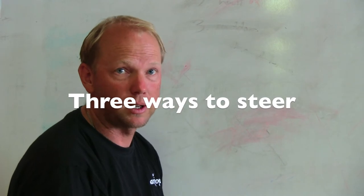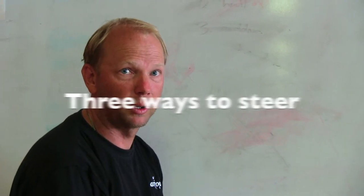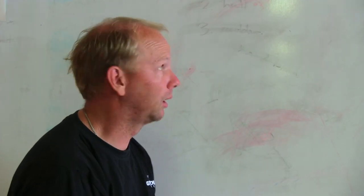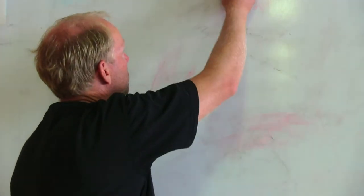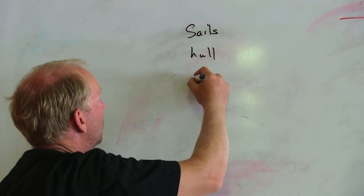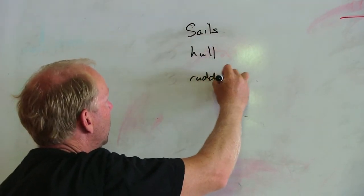I alluded to steering in the last section on mark running, so I suppose I'd better say something about that. I listed them off in three categories. The first one was sails, the second one was hull, and the third one was rudder.